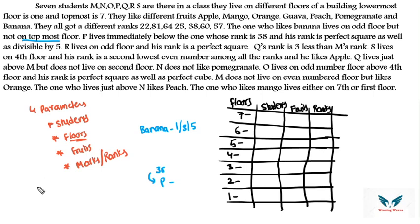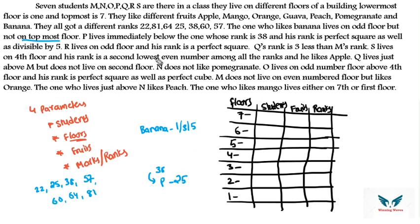Writing marks in ascending order: 22, 25, 38, 57, 60, 64, 81. P's rank must be a perfect square and divisible by 5. Perfect squares among the marks are 25, 64, and 81 — but only 25 is divisible by 5, so P's rank is 25. R lives on an odd floor and his rank is a perfect square; since 25 is taken, R's rank is either 64 or 81.